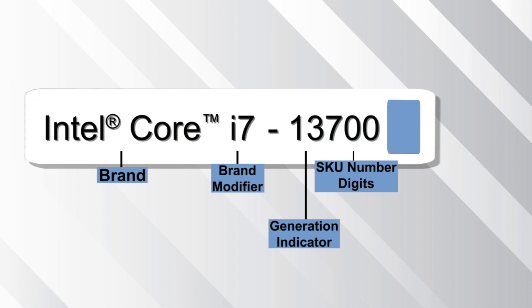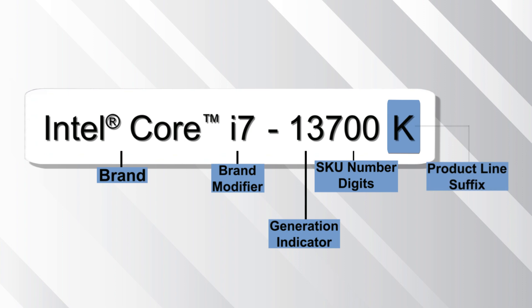The last part is the product line suffix. The product line suffix at the end of each Intel processor name lets you know what each processor is generally meant for. Some computers have Intel chips without any letters — those are standard base chip models.